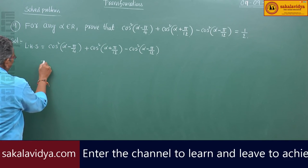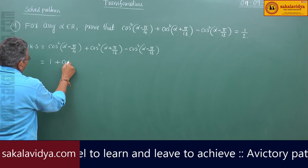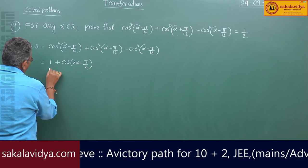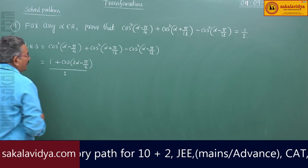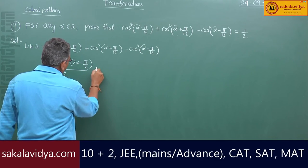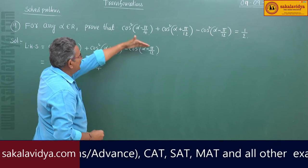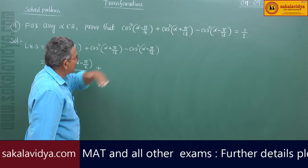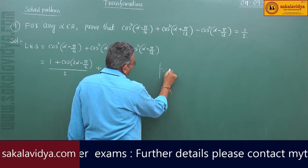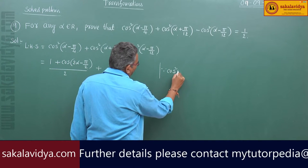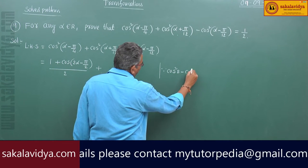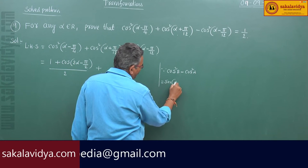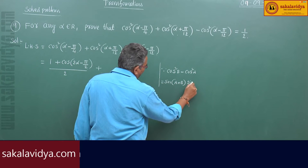So this we can write as (1 plus cos(2 alpha minus pi by 2)) by 2 plus cos squared b minus cos squared a. The identity cos squared b minus cos squared a equals sin(a plus b) into sin(a minus b).